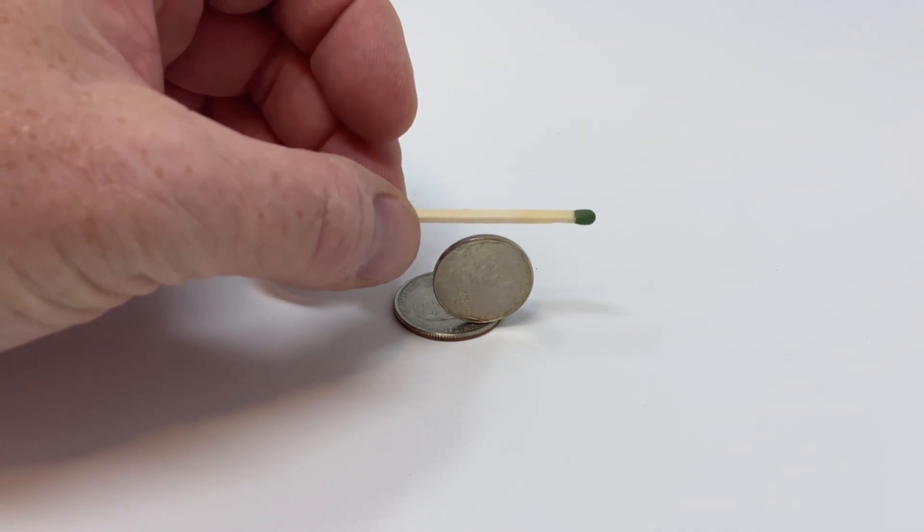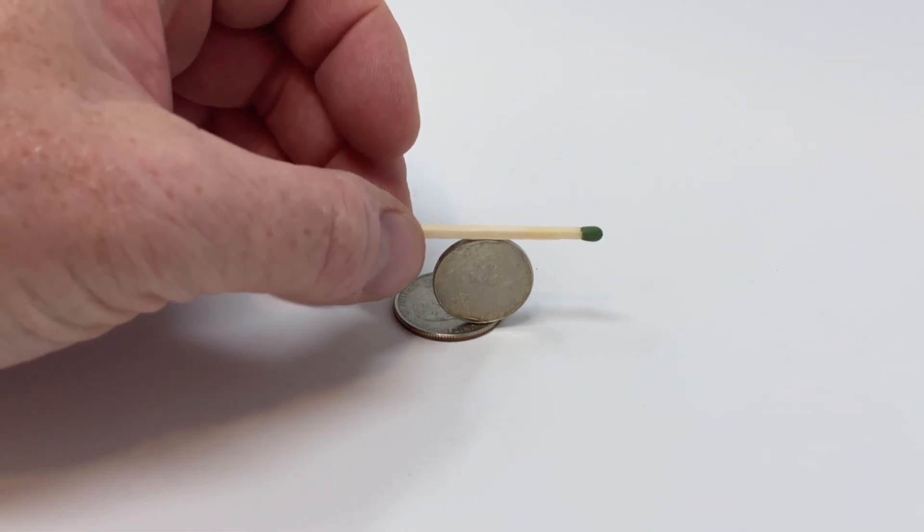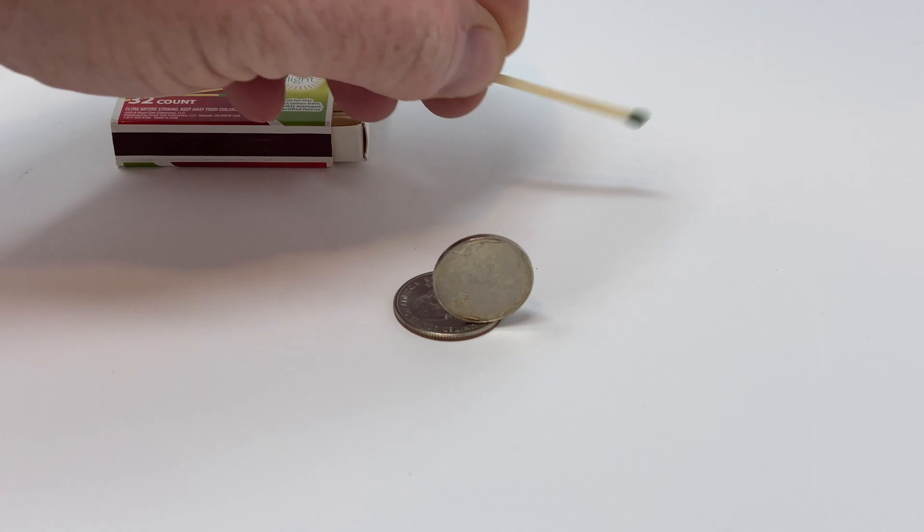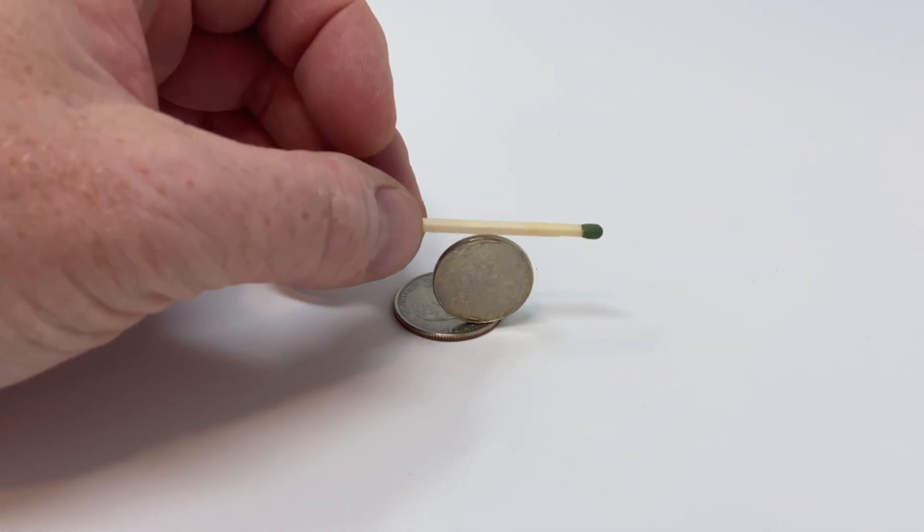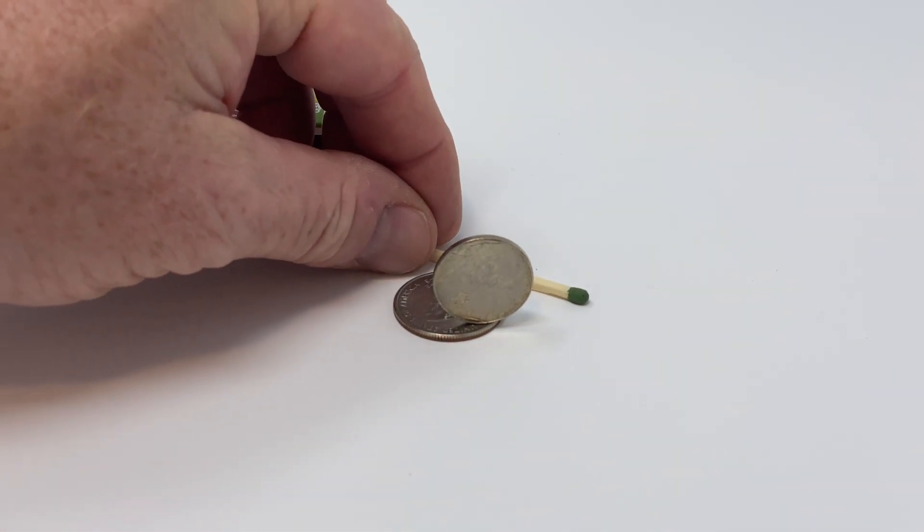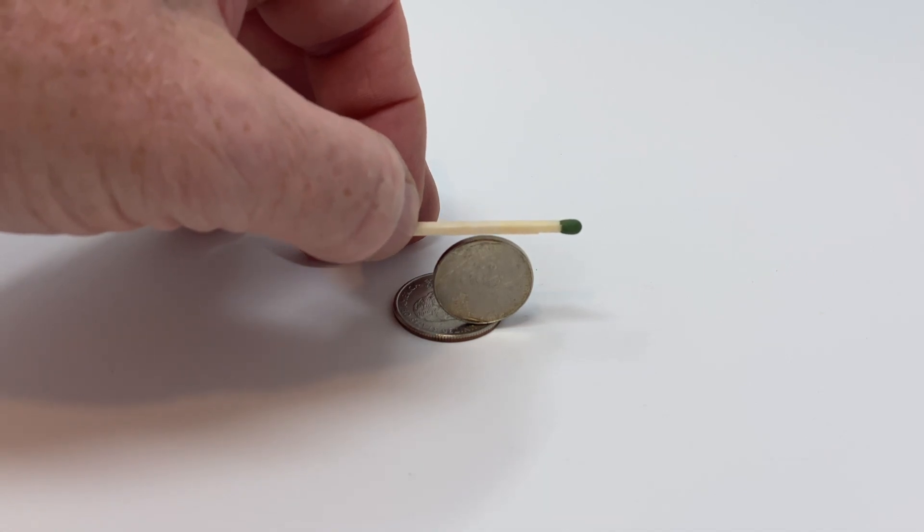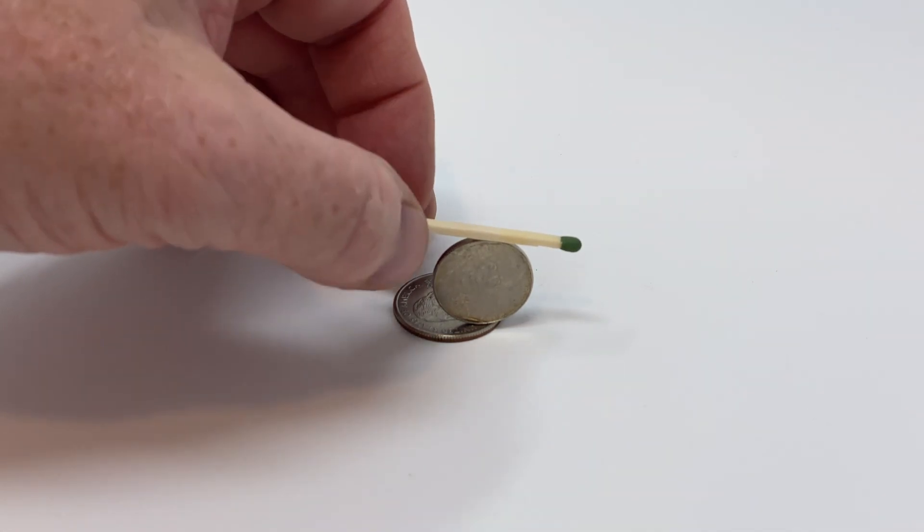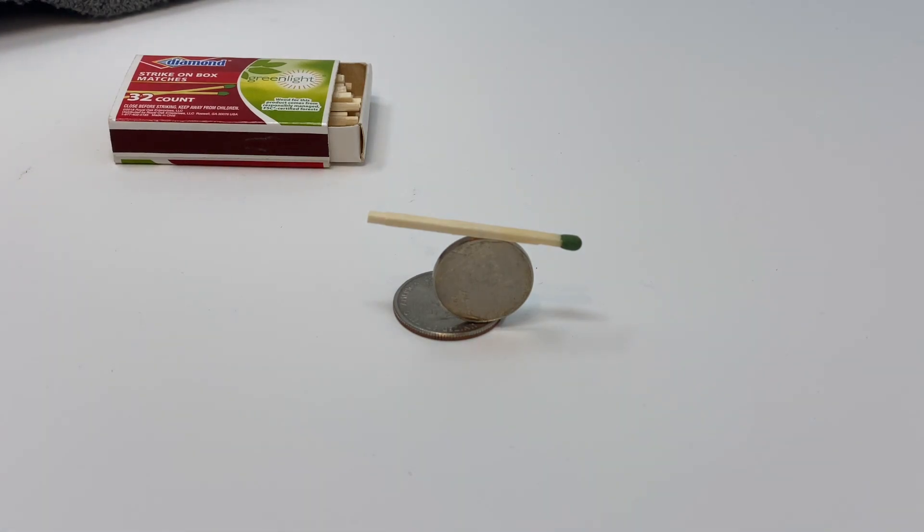Then I'm going to try really hard to balance this matchstick on top of the nickel. Sometimes that takes a couple of tries. Now recognize that there's nothing that is sticking the nickel to the quarter and I'm not sticking the matchstick to the nickel with anything.